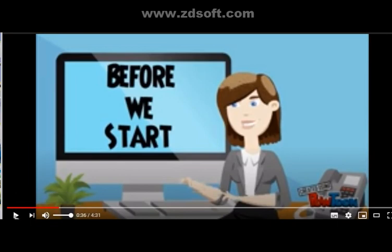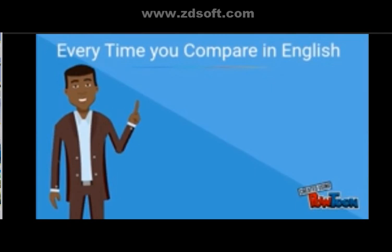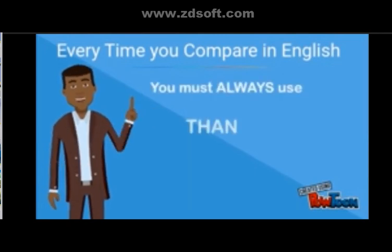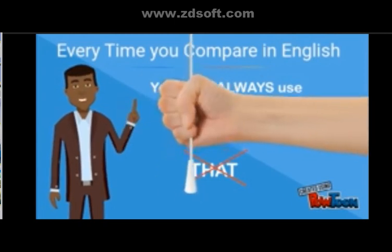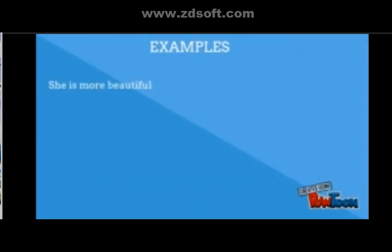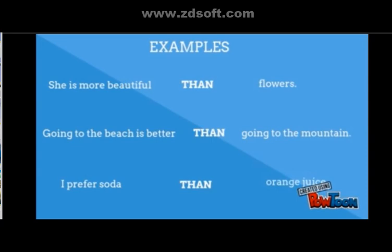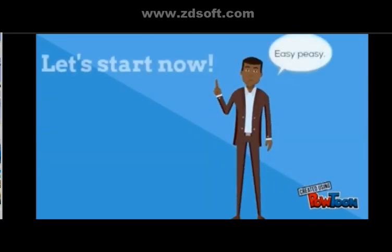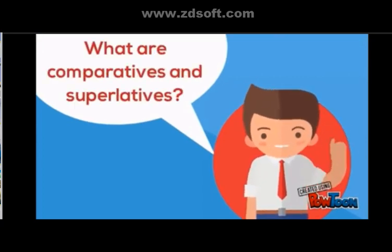Before you start, I need you to know something. Every time you compare in English, you must always use 'than' instead of 'that'. For example: 'She is more beautiful than flowers,' 'Going to the beach is better than going to the mountain,' 'I prefer soda than orange juice.' See? Easy peasy. Let's start now.